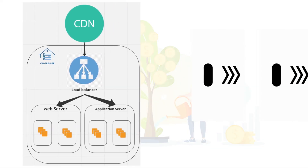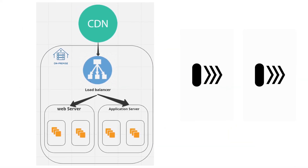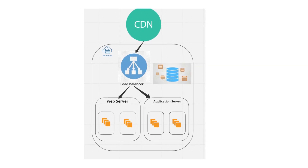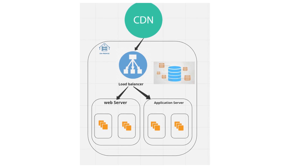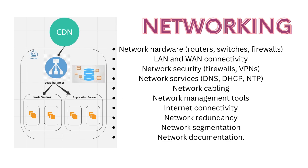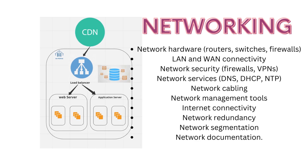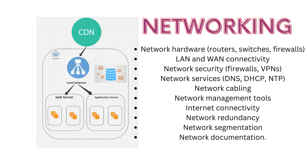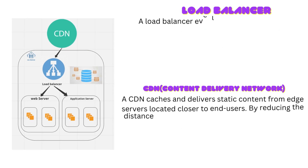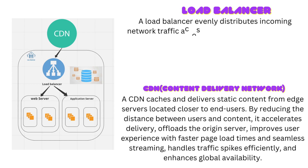We thought about a few services needed for this on-prem architecture. First, we need on-prem servers to host the application's core infrastructure, including the web server and application server. We also need a dedicated database server to store user profiles, posts, and other essential data using a database management system like MySQL or PostgreSQL. For security, we need a networking infrastructure with routers, switches, and firewalls to ensure secure and reliable communication. We'll also need a load balancer to distribute incoming user requests across multiple servers and ensure optimal performance.